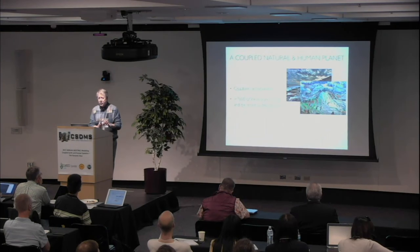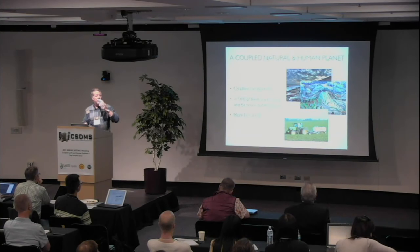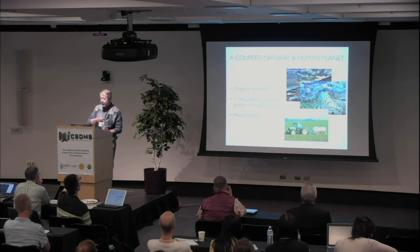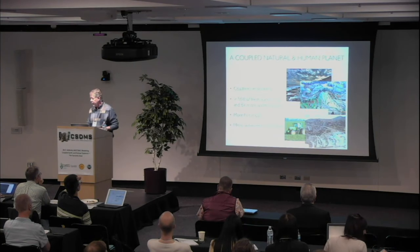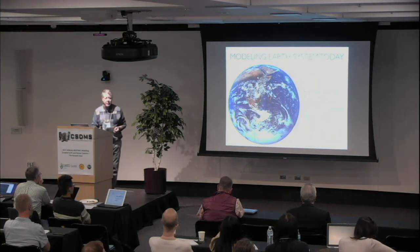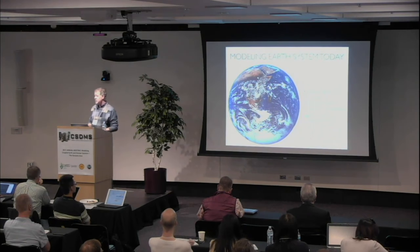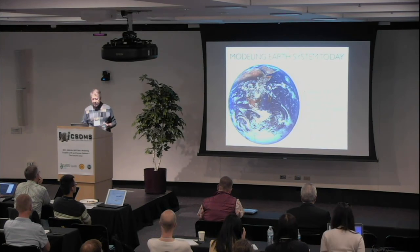Over half of the surface fresh water that's available is used by people, mostly for agriculture. More nitrogen is cycled by anthropogenic processes than natural processes today. More terrestrial sediment is transported by anthropogenic processes than natural processes today. We live in a truly coupled natural and human planet, but our ability to model these processes hasn't really caught up with this reality the way it should, given the world that we live in today.